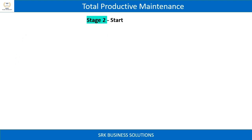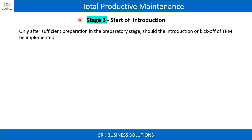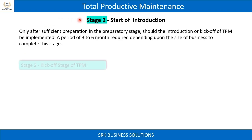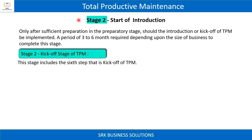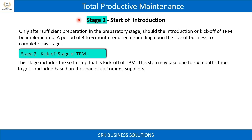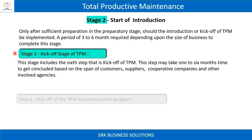Stage 2 is the start of introduction. Only after sufficient preparation in the preparatory stage should the introduction or kickoff of TPM be implemented. A period of three to six months is required, depending upon the size of the business, to complete this stage. This step may take one to six months based on the span of customers, suppliers, cooperative companies, and other involved agencies.